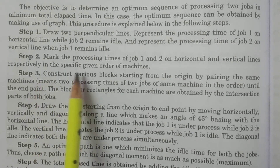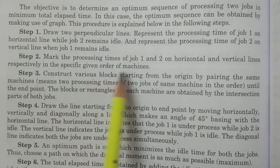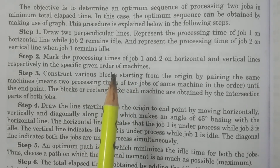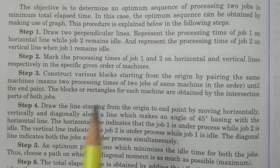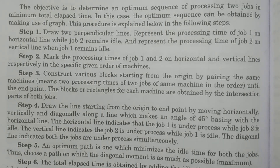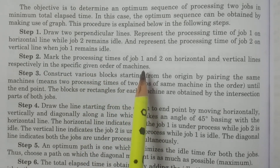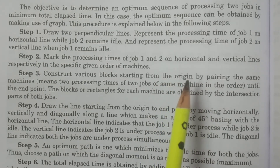Step two: mark the processing times of job one and job two on the horizontal and vertical lines respectively, according to the specific given order of machines. We have already noted that the order of machines need not be the same for both jobs — job one and job two may have completely different machine orders.